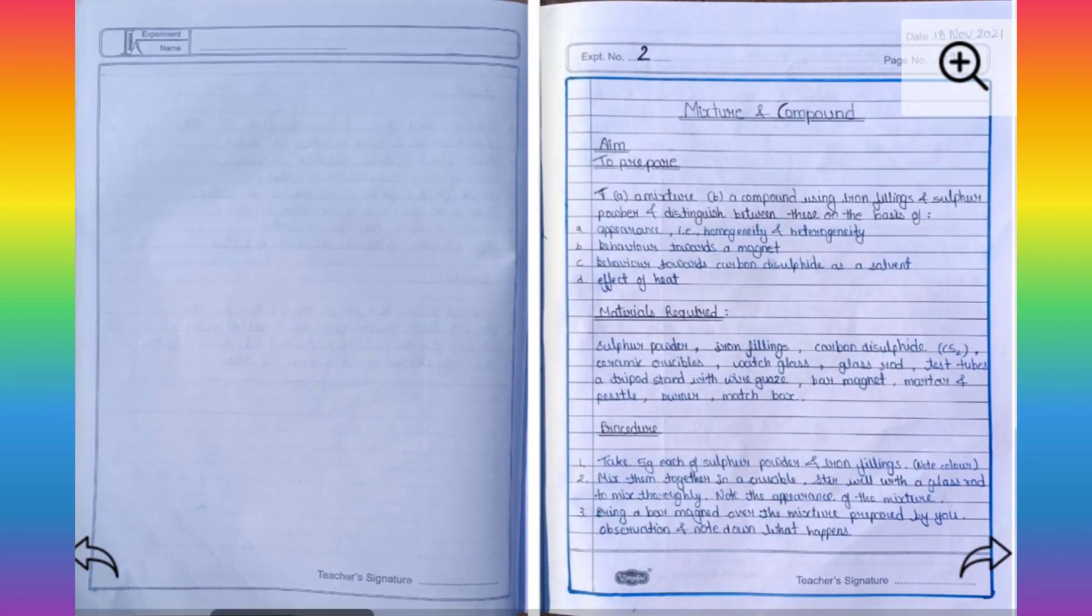On the next page, I write my second experiment. First of all, experiment number, date, page number and experiment topic. Then aim of the experiment. Then materials required in this experiment. Procedure.